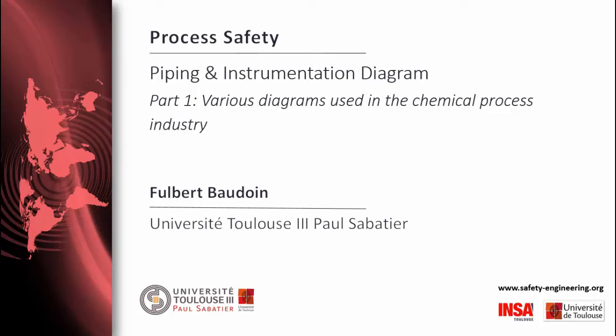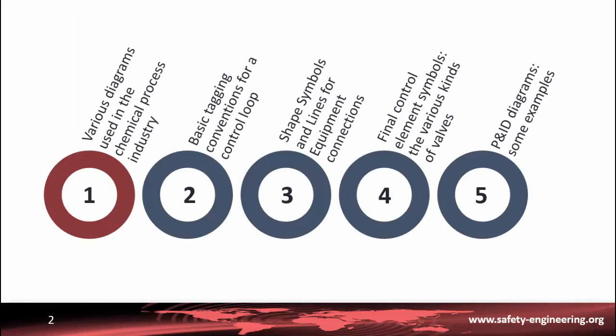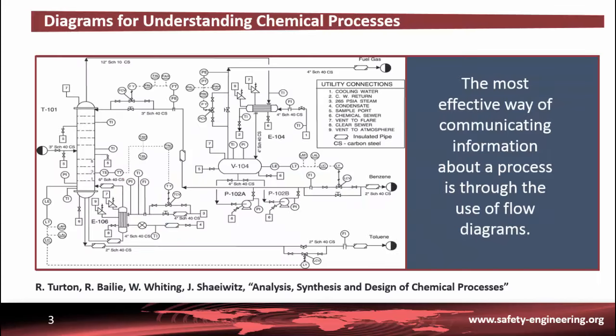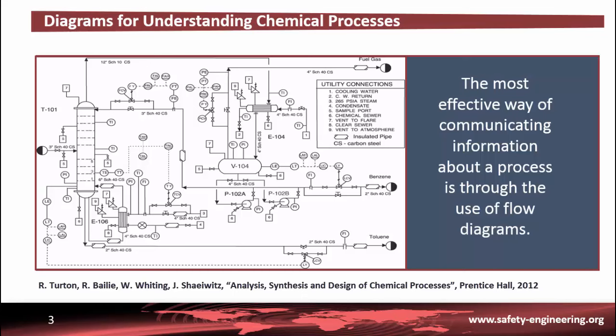Hello, my name is Fulbert Baudoin and I'm going to talk about the piping and instrumentation diagrams. The first part concerns the various diagrams used in the chemical process industry. The chemical process industry is involved in the production of a wide variety of products that improve the quality of our lives and generate income for companies and their stockholders.